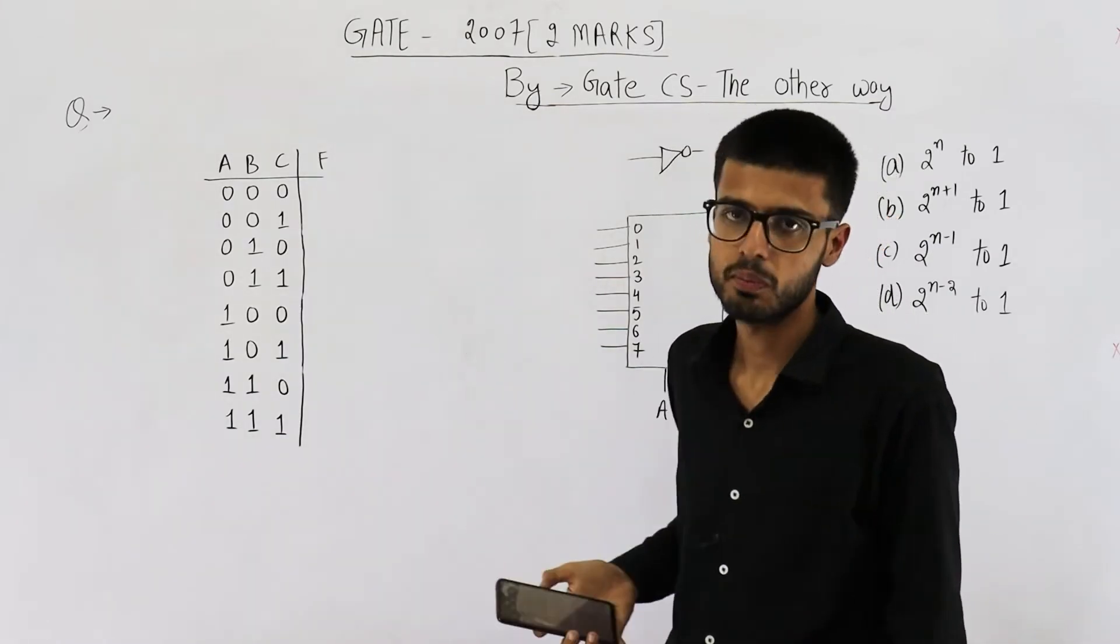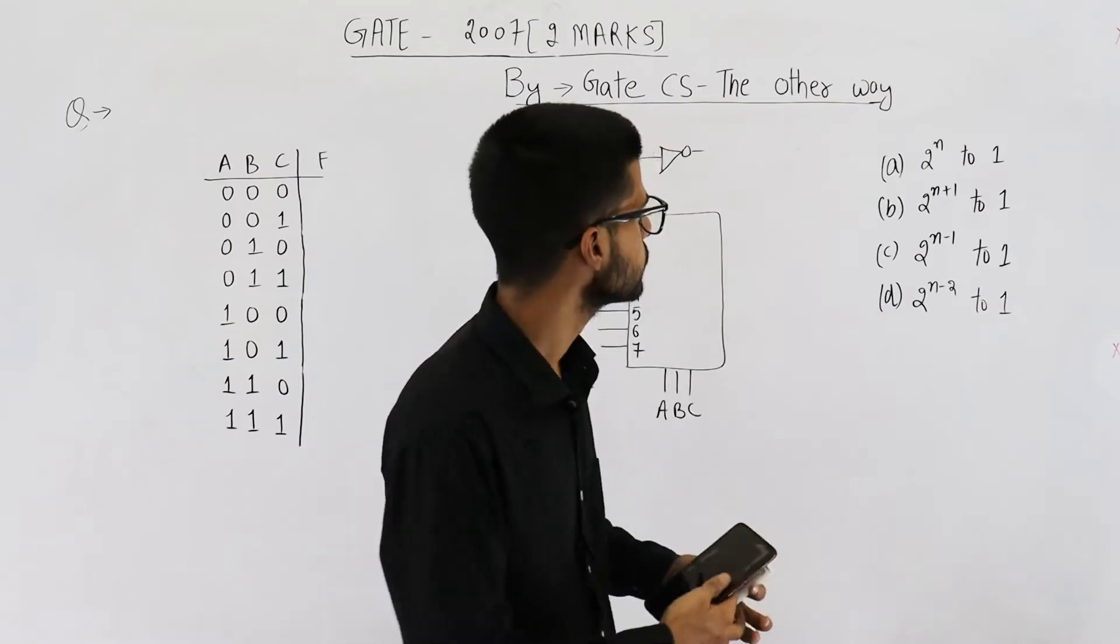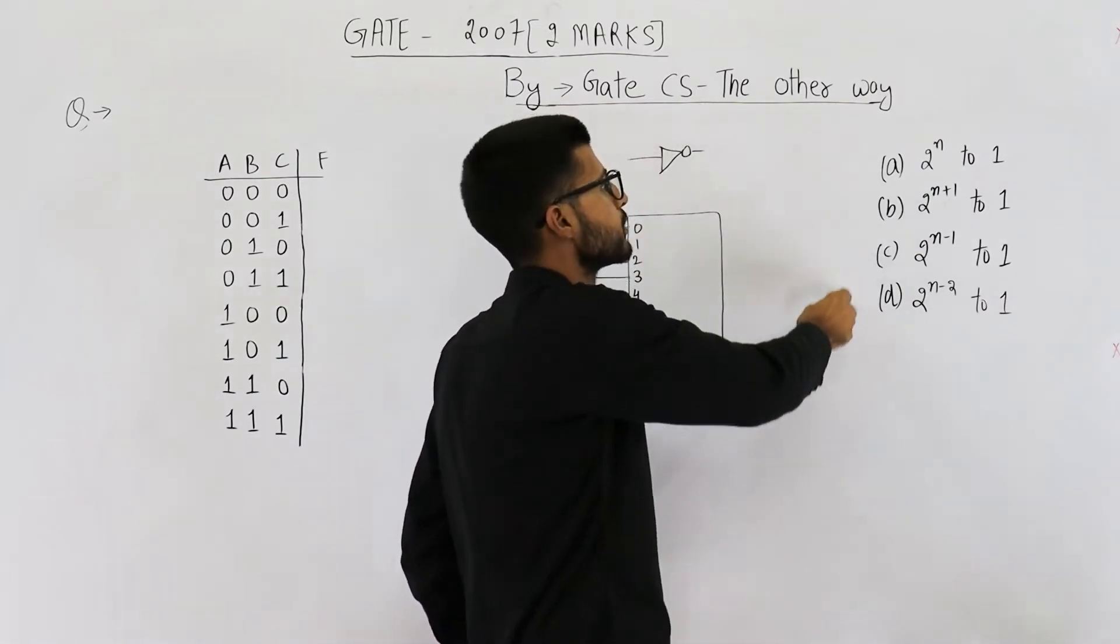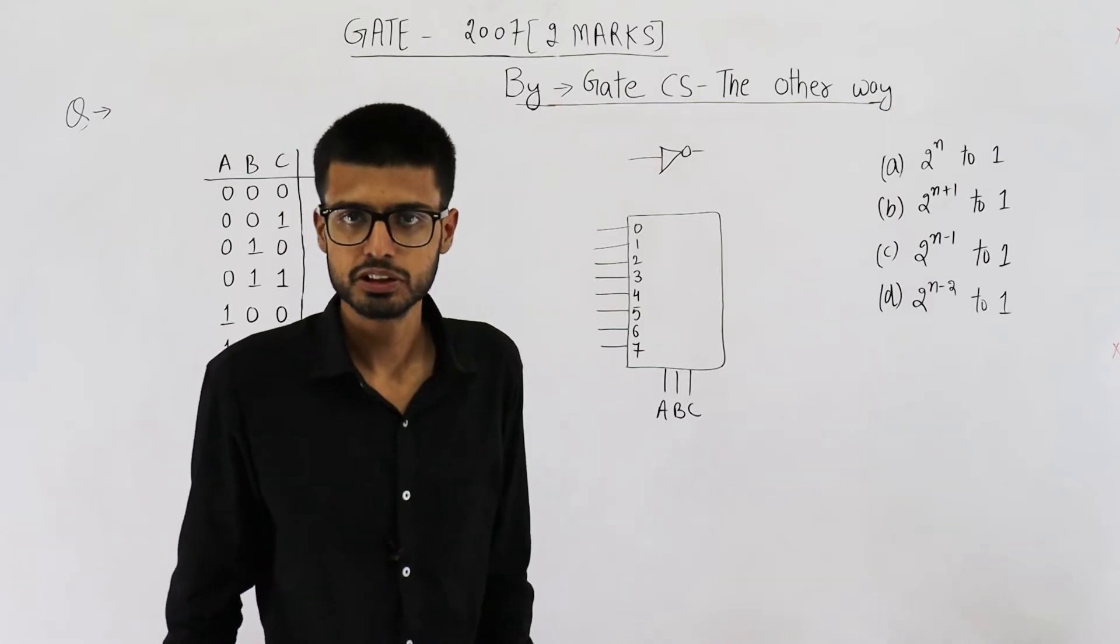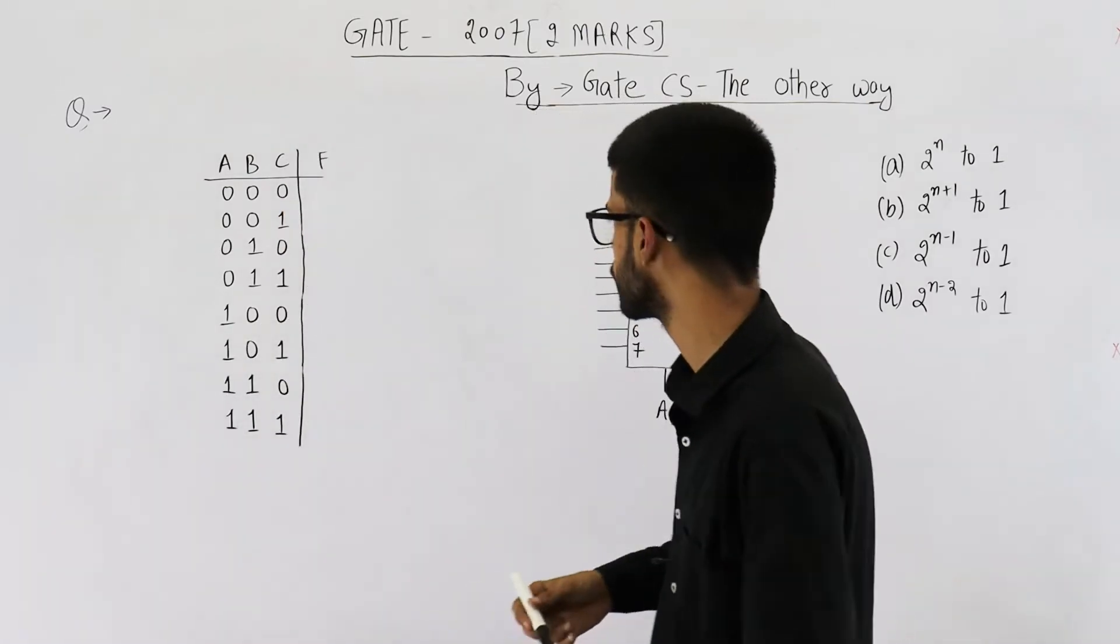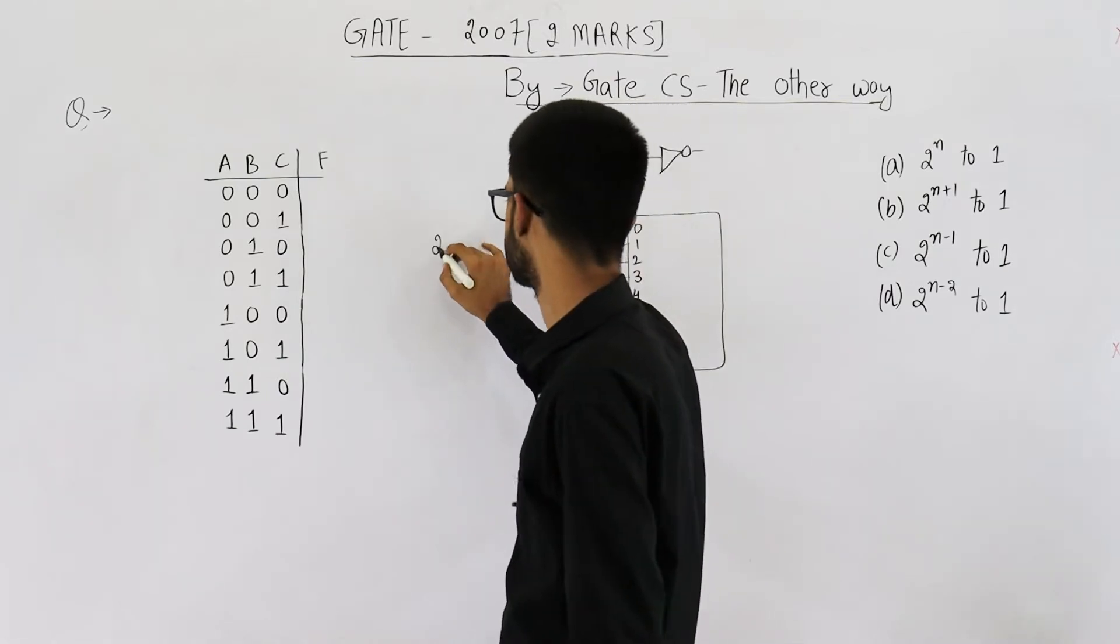What is the minimum size of multiplexer needed? These are the four options that they have given. Now you very well know to implement a function of n boolean variables, you need two raised to the power n is to one multiplexer.